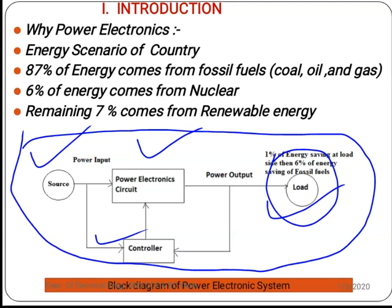The controller provides the feedback signal. For example, in the case of a motor, if we want to control speed, the speed is sensed through a sensor and the feedback signal is transferred. The power electronic system provides what the load requires based on this feedback.